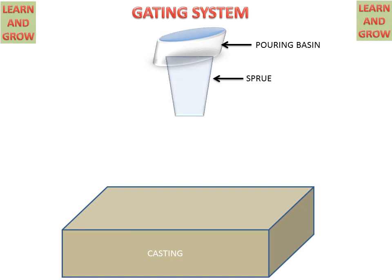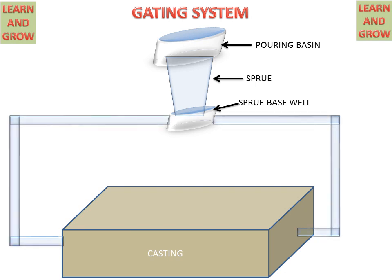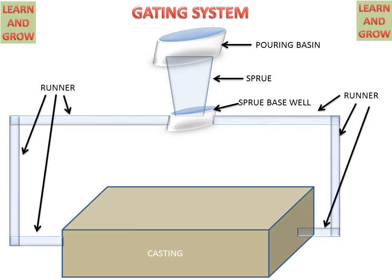This is the sprue, for providing flow to the metal. This is the sprue base well — the sprue base well will distribute the molten metal to the runners, which connect it to the casting that we want to make as a product.